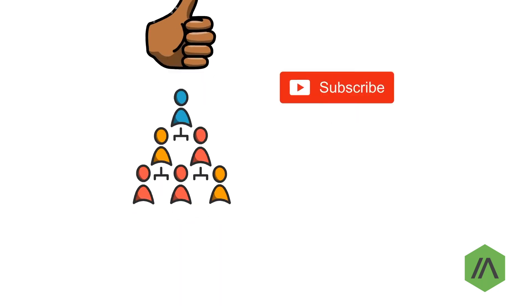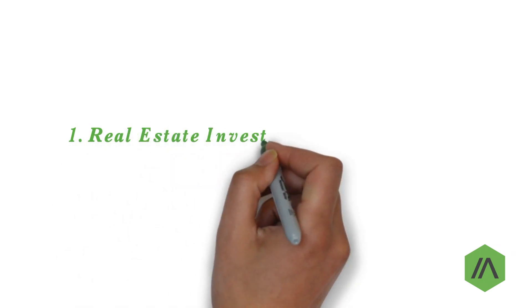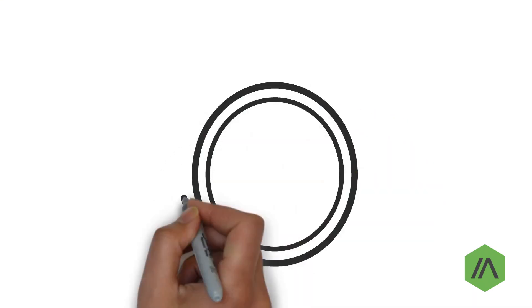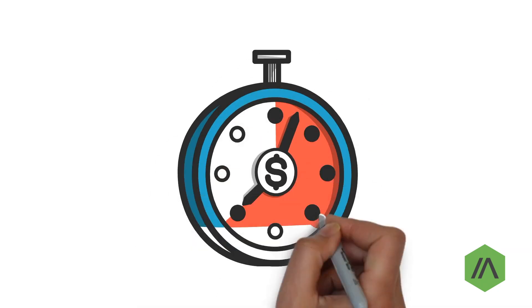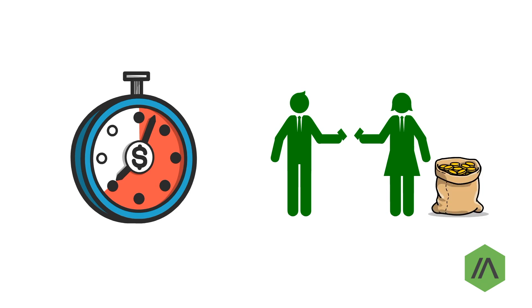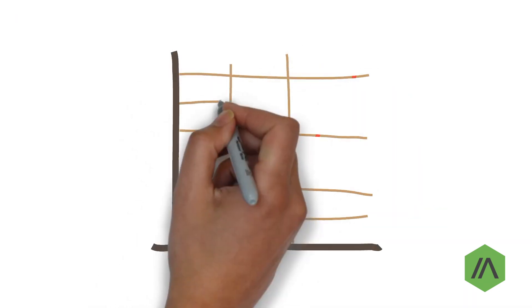The most popular way in which you can invest in real estate is through real estate investment trusts, commonly known as REITs. REITs are companies that operate or own income-generating real estate using the capital contributed by their investors. Since the shares of REITs trade on stock exchanges, all you need is an equity brokerage account with a stockbroker to start investing. The real estate market is not liquid, which means that it takes time to buy and sell properties. Buyers and sellers in the real estate market are not readily available because of the high transaction value and documentation involved in closing the deal. But that's not the case for REITs — you can easily buy and sell them on an exchange.